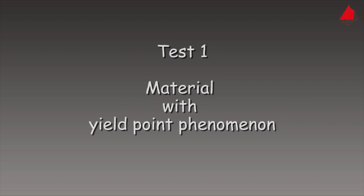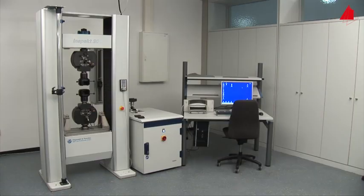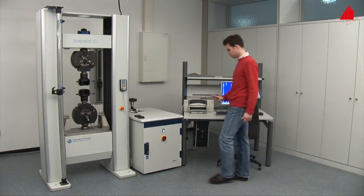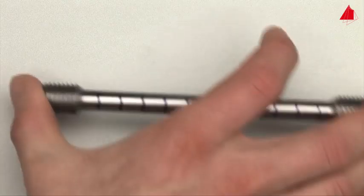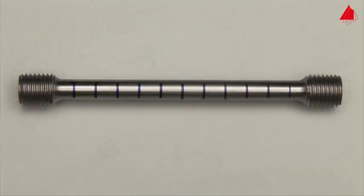The tensile test: first test material with yield point phenomenon. In the first tensile test, a plain carbon steel with yield point phenomenon is to be tested. This is the test piece. It has a cylindrical test region with an original diameter of 10 millimeters.